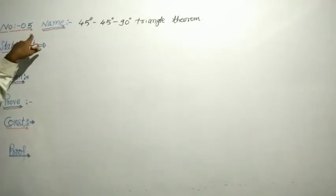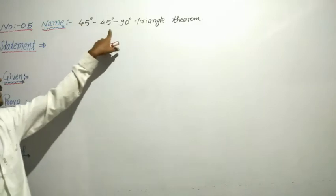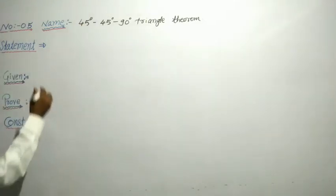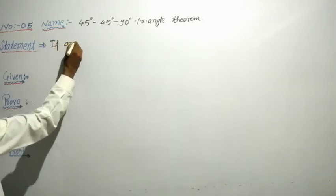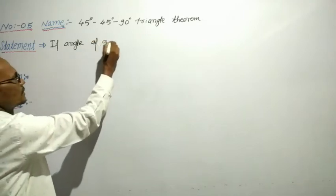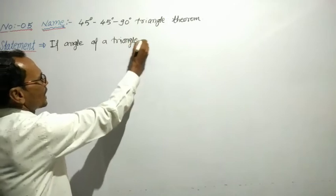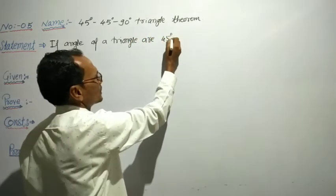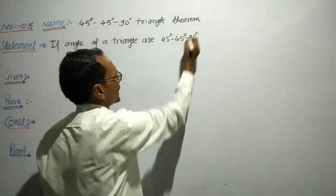Theorem number 5. The name is the 45-45-90 degree triangle theorem. What is the statement? If the angles of a triangle are 45 degrees, 45 degrees, and 90 degrees,